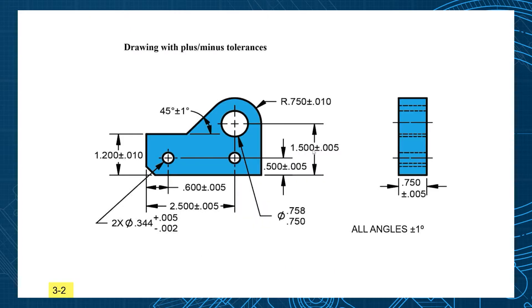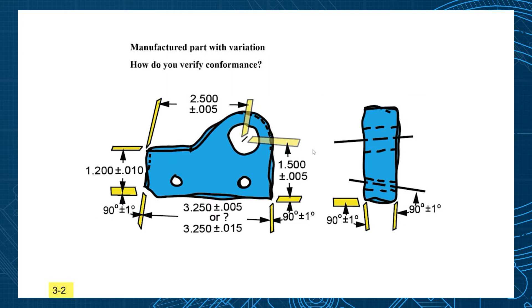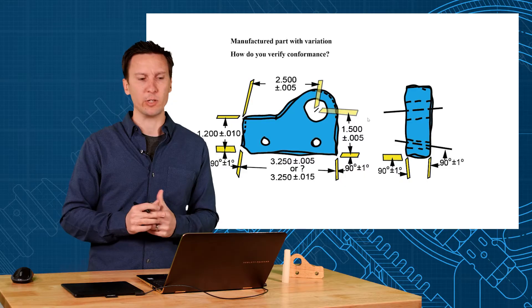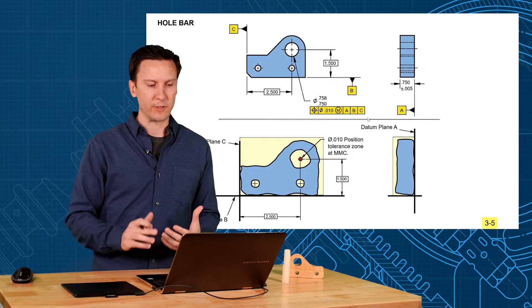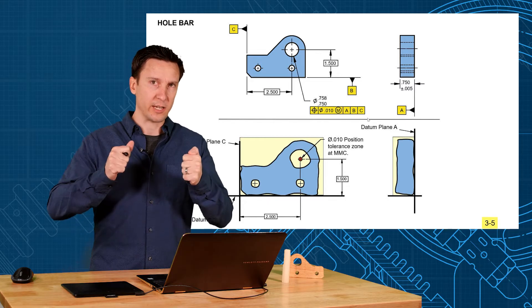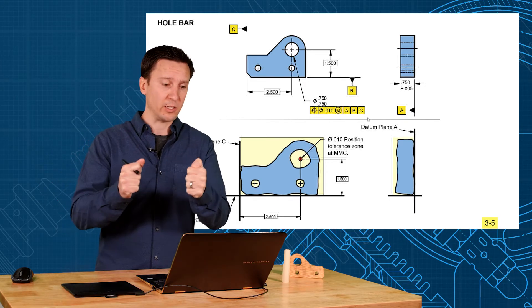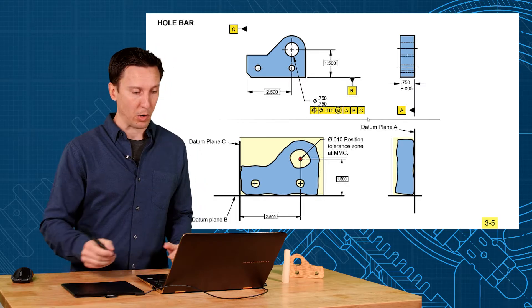We talked about how plus-minus tolerancing can be confusing. When we talk about 3D variations, it can be hard to index the part. How do you know how to index the part in a unique way? That's where the datum features come in. You're going to contact A on three points, B on two points, and C on one point. That's the only way you can handle this blob of an imperfect part.